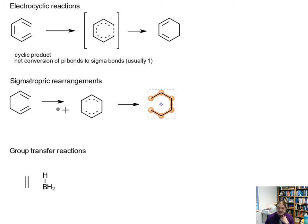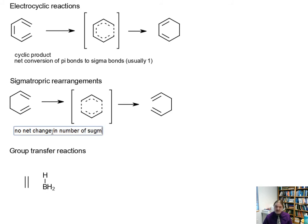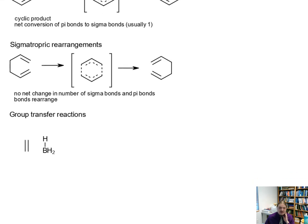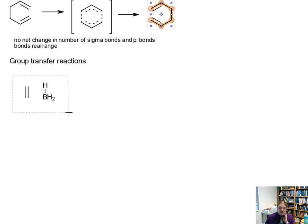This example of a sigmatropic rearrangement is actually a Cope rearrangement. I will have some videos that talk about this particular rearrangement and how it can be made useful. This particular version looks like it may not be the most productive reaction because the product is identical to the reactant, and that's true in this specific case. But once the structure of the molecule gets more complicated, these things can in fact be productive. There's no net change in number of sigma and pi bonds—the bonds have rearranged. I have sigma bonds where I didn't have bonds before, pi bonds where I didn't have pi bonds before, but there's no net change in number.